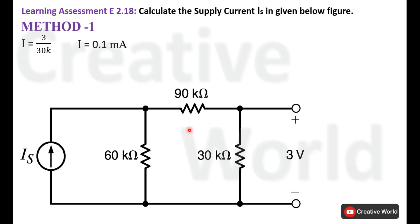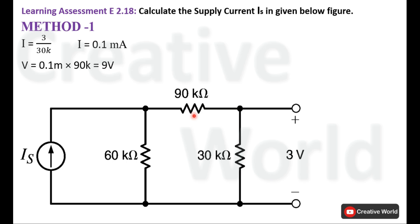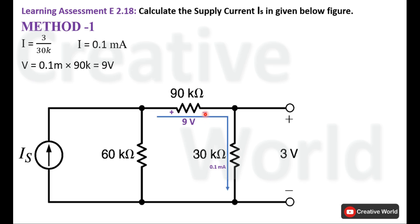This same current also flows through the 90 kΩ resistance because of the series connection. So we can calculate the voltage across the 90 kΩ resistance as well. The voltage across the 90 kΩ resistance will be 0.1 milliampere multiplied by 90 kΩ, which gives 9 volts. Because of the clockwise direction, the voltage across this 90 kΩ resistance will have a positive sign at the top and a negative sign at the bottom.